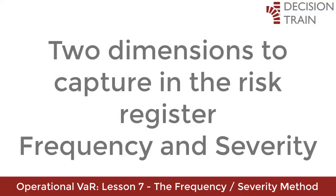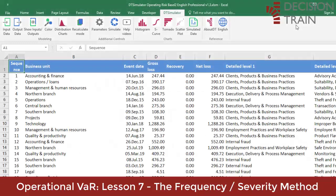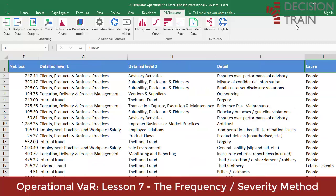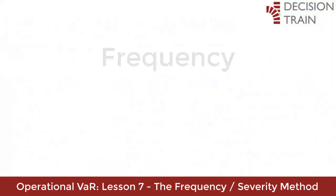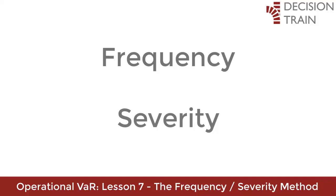In a risk register, the historical information compiled allows us to calculate, for the entire banking or financial institution, the frequency and severity of operational risk events according to the administrative unit or category of risks involved. To capture the full dimension of a risk, we must consider on the one hand its frequency — how many times will the event happen during a year — and on the other hand its severity — for each event that occurs, what will be its impact.